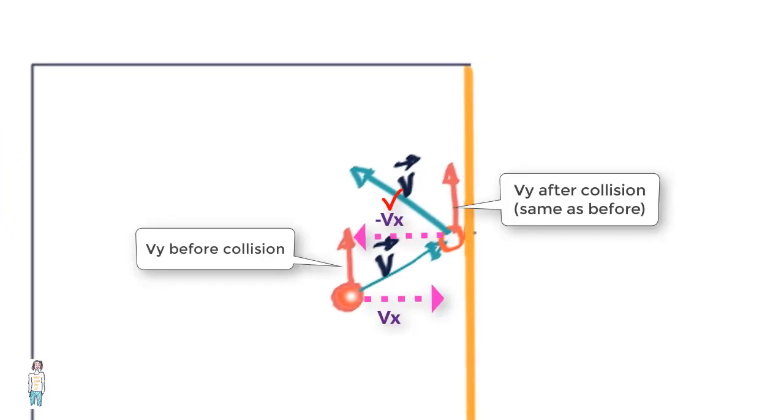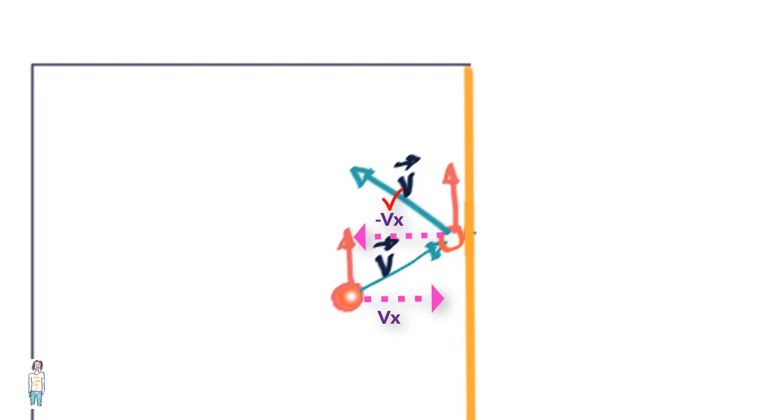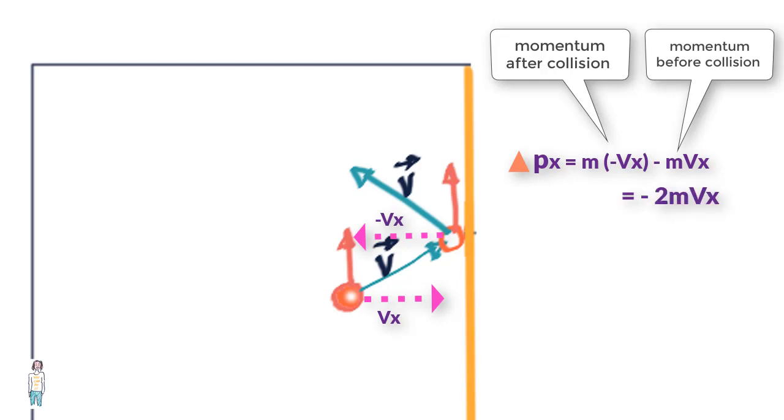So if the x component of the velocity gets reversed with no loss in magnitude, the momentum of the particle changes only in the x direction. If the velocity in the x direction was vx before the collision and becomes minus vx after collision, then we can say the change in momentum delta px equals minus mvx minus mvx which equals minus 2mvx.